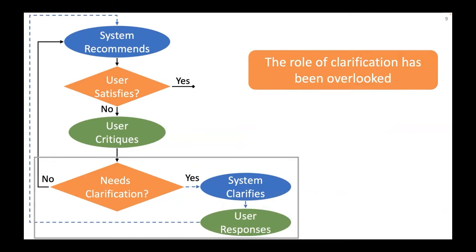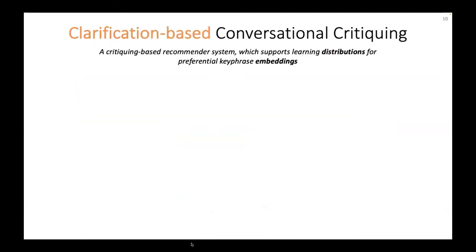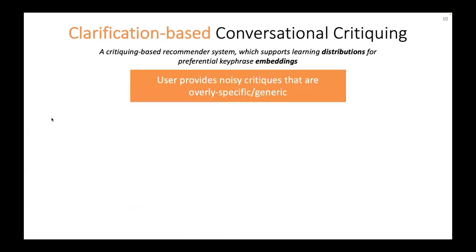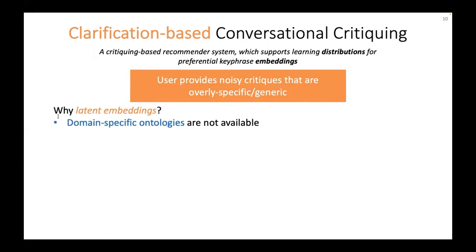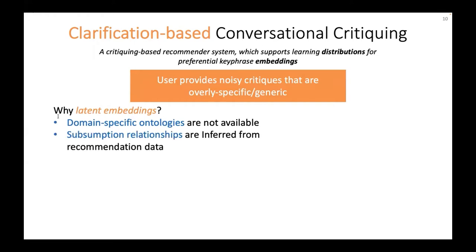The question is how do we enable this step for the system to prompt clarification questions. For clarification-based conversational critiquing, it supports learning distributions for preferential keyphrase embeddings. Users tend to provide noisy critiques that are either overly specific or overly generic. We work with latent embeddings because the system needs domain-specific ontologies between critical keyphrases, which are not available, and therefore subsumption relationships can only be inferred from the recommendation training data.